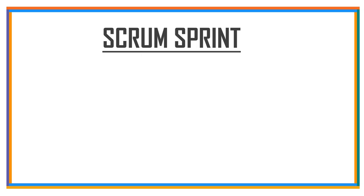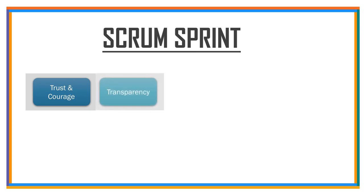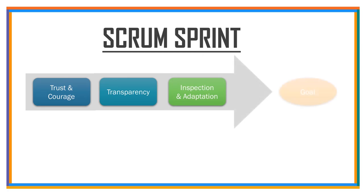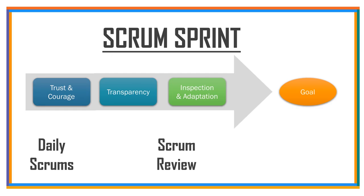Our next topic is the Scrum Sprint. A Scrum Sprint is a repeatable fixed time box during which a done product of the highest possible value is created. The Sprint lies at the core of the Scrum agile methodology and can be thought of as an event which wraps all other Scrum events, like daily scrums, scrum review, and sprint retrospective.